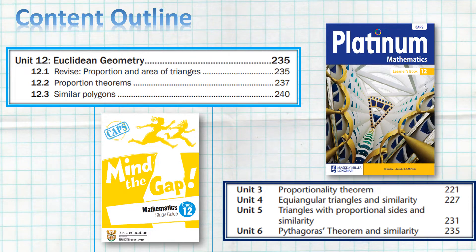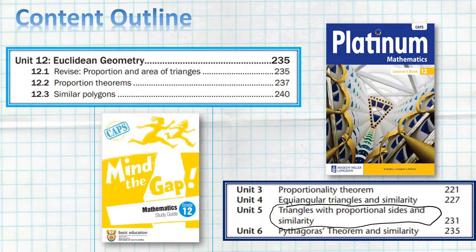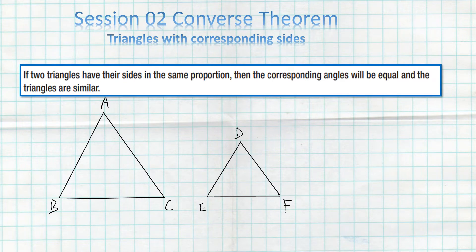Let's take a look at the content outline. Today in session three we want to focus on triangles with proportional sides and also similarity. The two textbooks we're going to be using are 'Mind the Gap' Mathematics Study Guide and also the Platinum Mathematics Learner's Book.